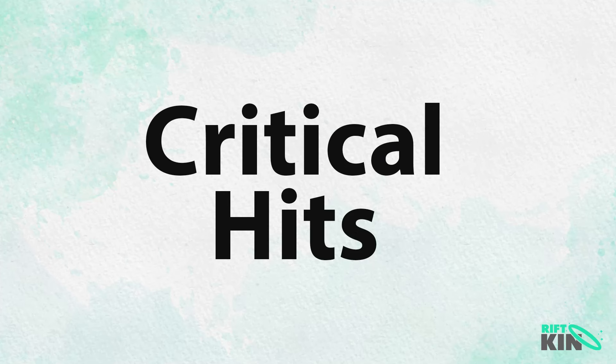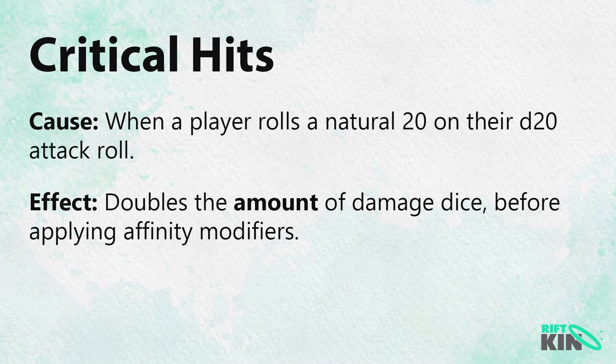Critical hits! Critical hits occur when a player rolls a 20 on their d20 attack roll, and doubles the amount of damage dice rolled as part of the attack. Critical hits are always factored before applying affinity modifiers during damage calculations.